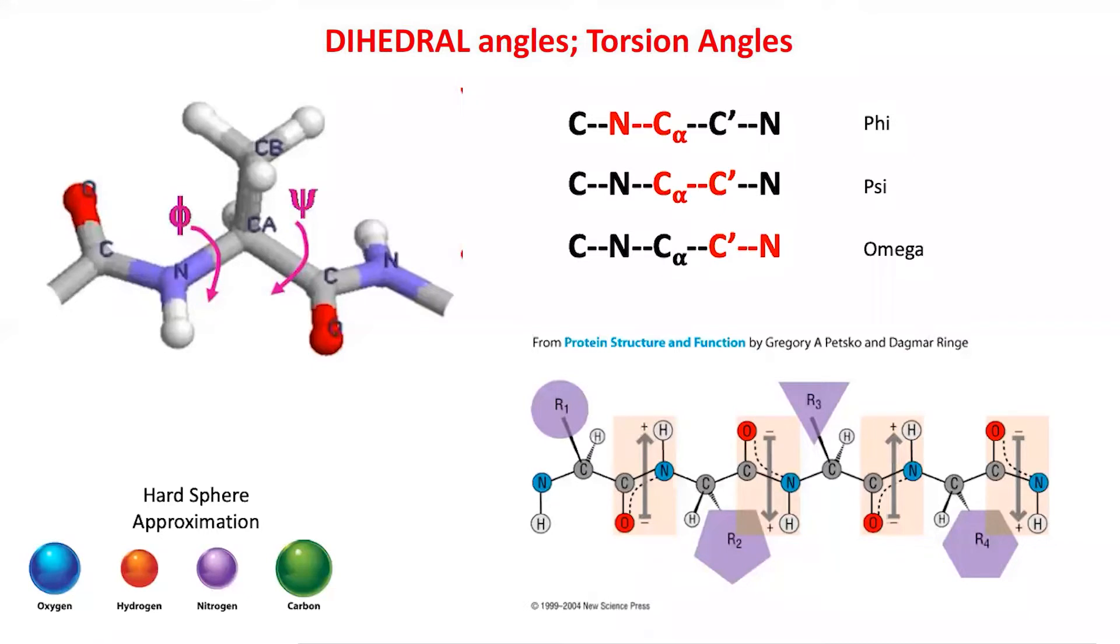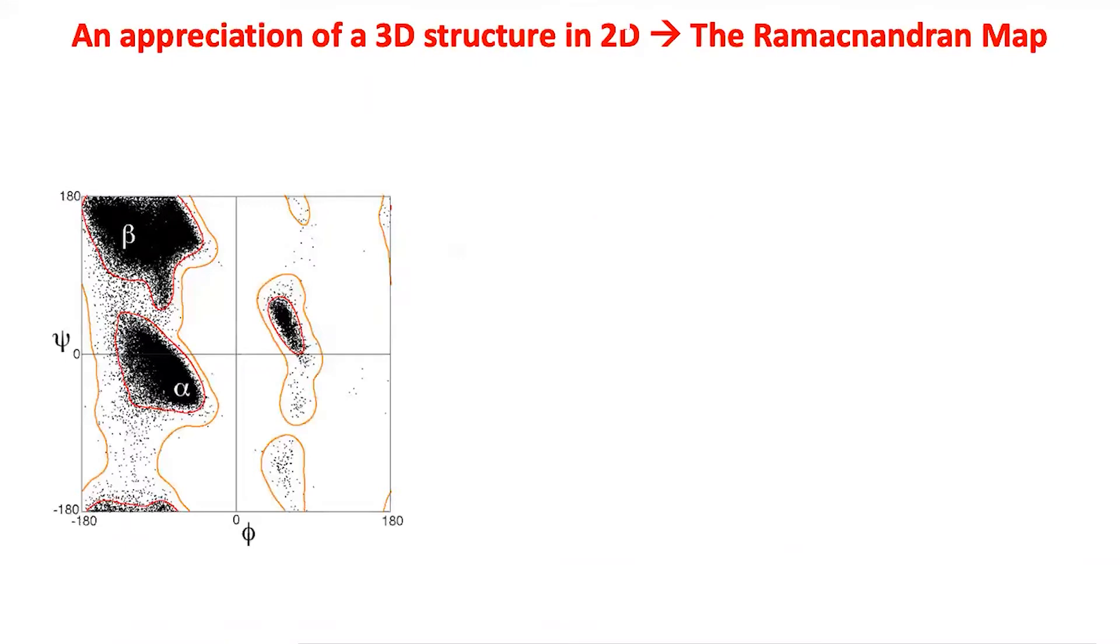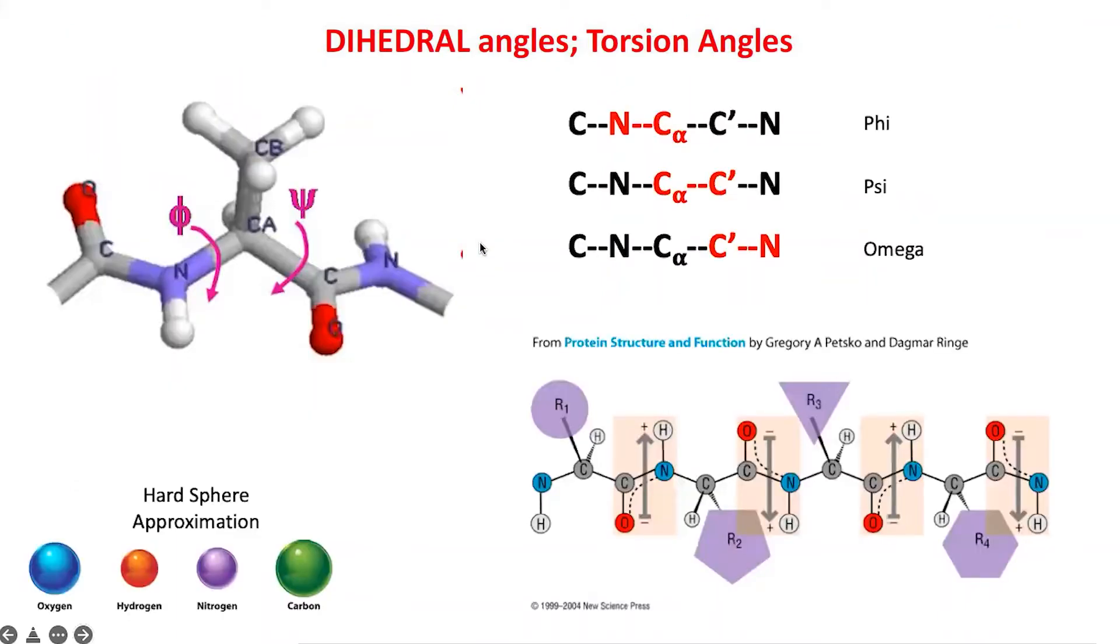These four atoms are in a continuous sequence in the polypeptide. Each dot you see represents one peptide, basically one unit with one phi and one psi right next to each other.